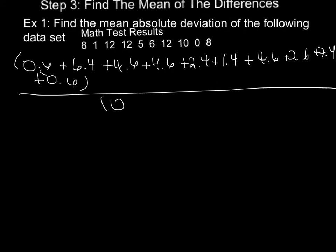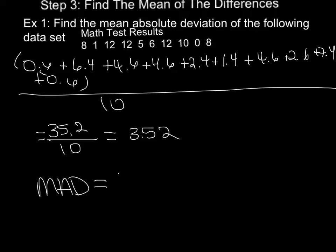So here is my work to add all 10 of my differences and then divide by 10. When I add up all my differences, I get 35.2. When I divide that by 10, then I get 3.52. So our mean absolute deviation, which we often abbreviate to be MAD, is 3 and 52 one-hundredths or 3.52.